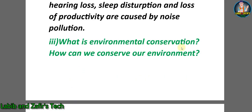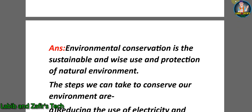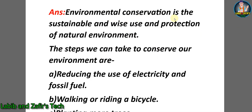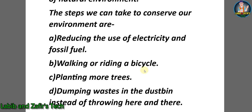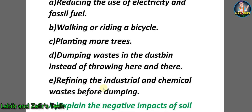Third descriptive question: what is environmental conservation and how can we conserve our environment? Answer: environmental conservation is the sustainable and wise use and protection of the natural environment. The steps we can take to conserve our environment are — A) reducing the use of electricity and fossil fuel, B) walking or riding a bicycle, C) planting more trees, D) dumping waste in the dustbin instead of throwing it anywhere, E) refining industrial and chemical wastes before dumping.